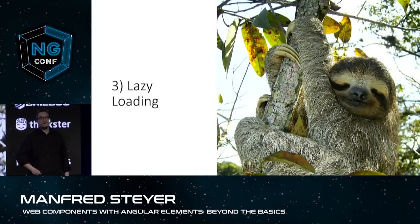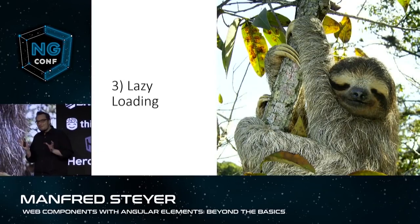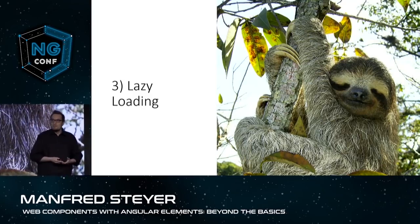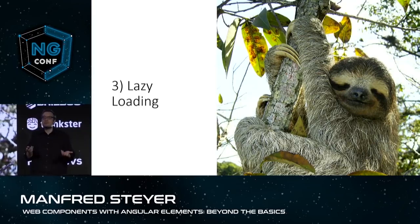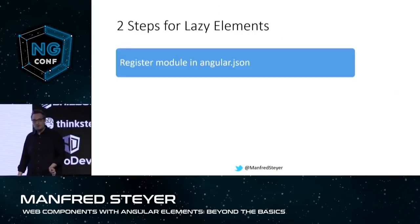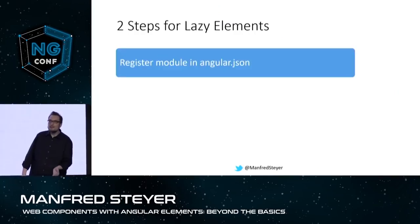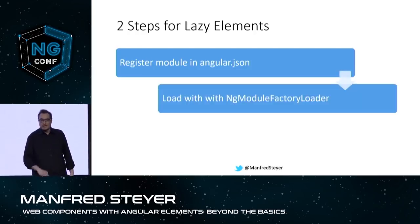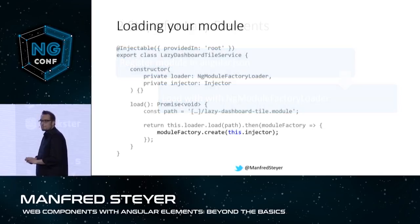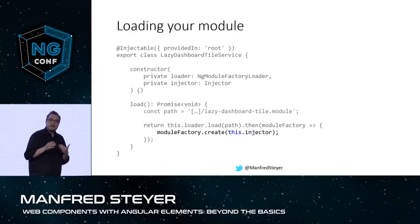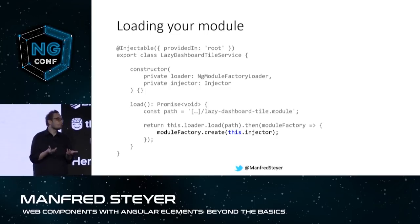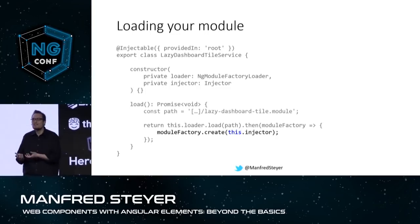Let's go one step further and talk about lazy loading. Normally when we talk about lazy loading, we are talking about lazy loading routes. But here it is not about routes — it is just about lazily loading a component. This can be done in two steps. First, you have to register your module with the lazy component in your Angular JSON. Then you can use the ng-module factory loader to load it just on demand. As this module is providing custom elements, you can use them immediately just by leveraging the document object. It is really as easy as that.